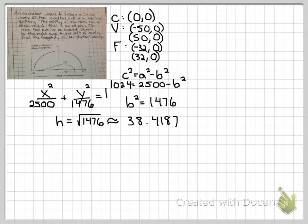Square rooting that, I got 38.4187 feet. I always do four decimal places, so I know my third decimal place is correct. The ceiling is at 38.4187 feet high.